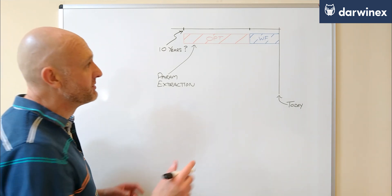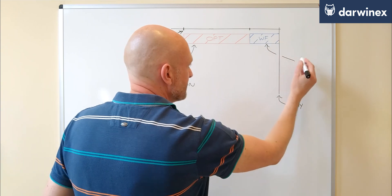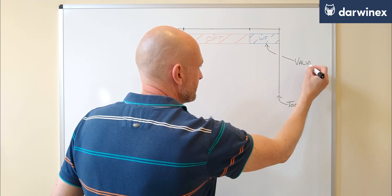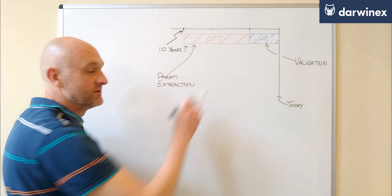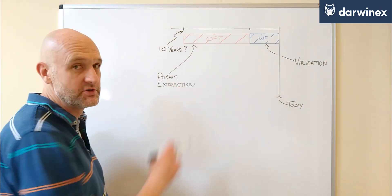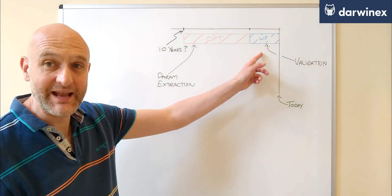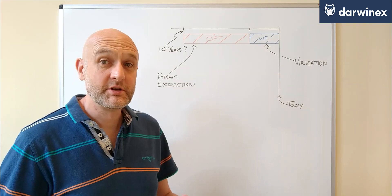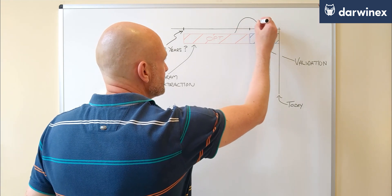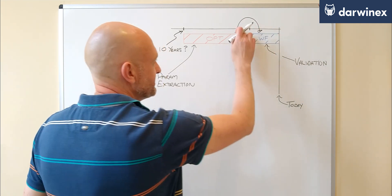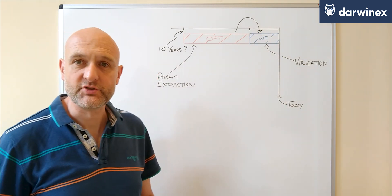Now the purpose of the walk-forward phase is quite different, and this is all about validation. So validating that the parameters that were chosen in this part of the process genuinely work on data that they've never seen before. And so the relationship between these two phases is that the parameters that are extracted from the optimization are then used in the walk-forward validation phase.